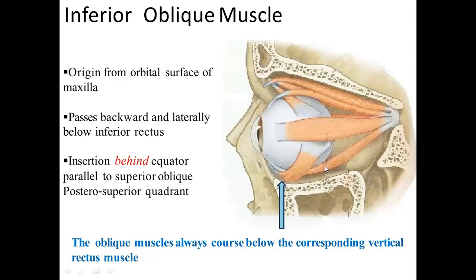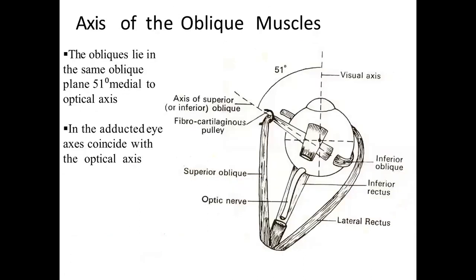The inferior oblique muscle takes origin from the orbital surface of the maxilla. It passes backward and laterally below the inferior rectus. Its insertion is behind the equator, parallel to the superior oblique insertion, in the posterior superior quadrant. The oblique muscles lie close below the corresponding vertical rectus. The oblique plane lies 50 degrees medial to the optical axis. In the adducted eye, the axis of the obliques coincides with the optical axis.